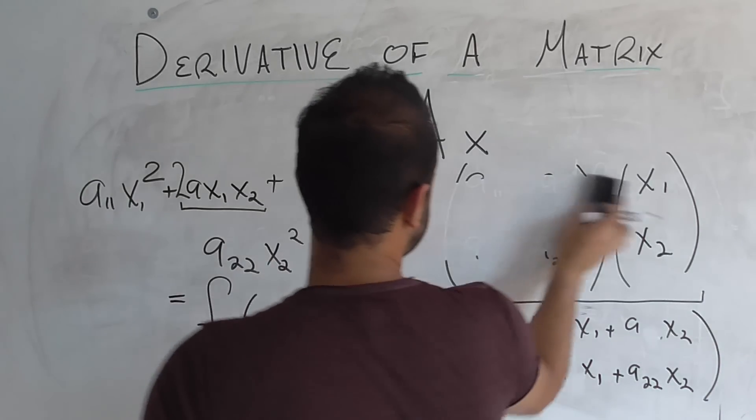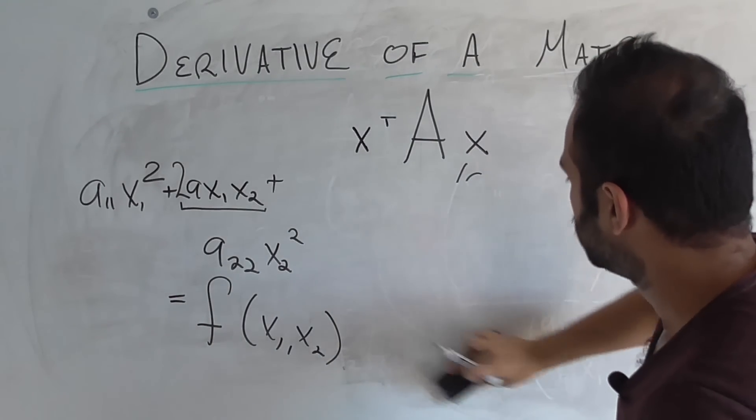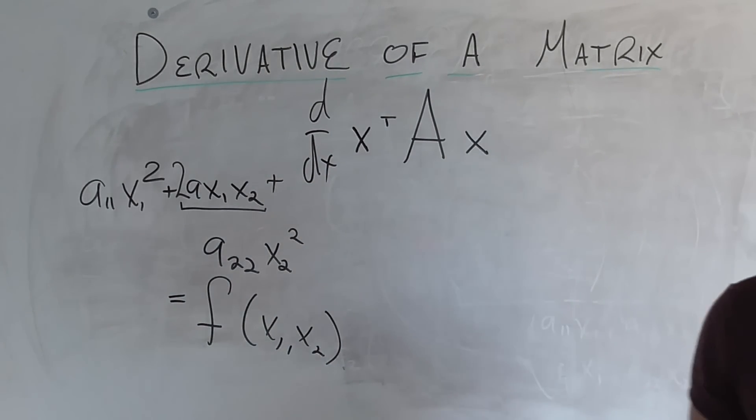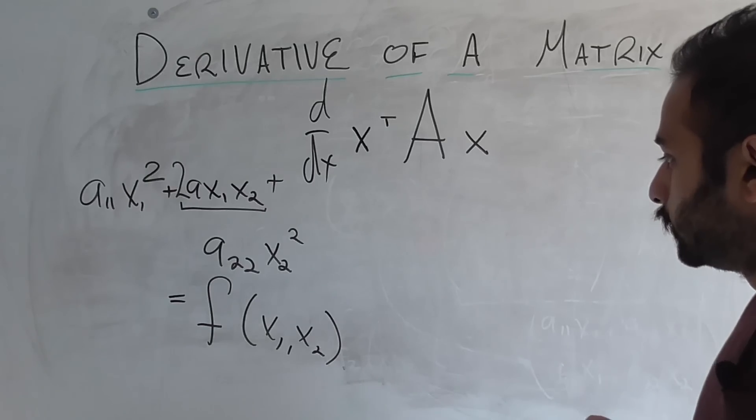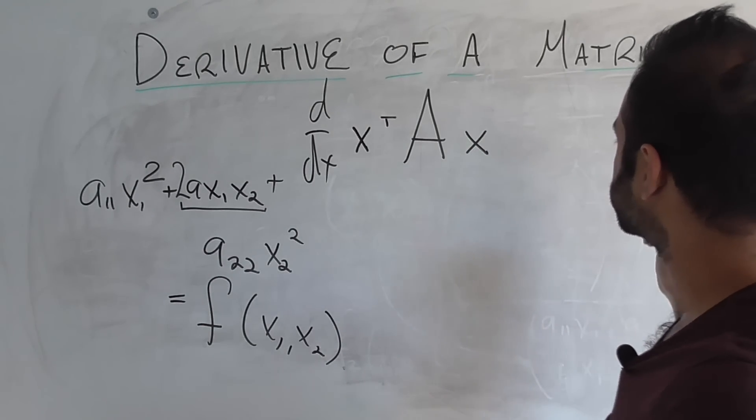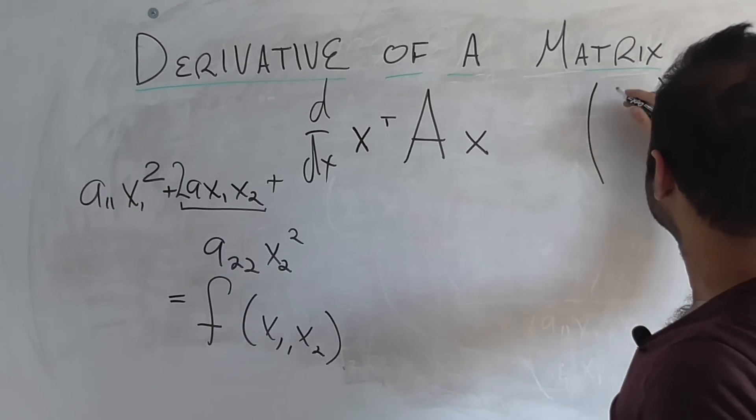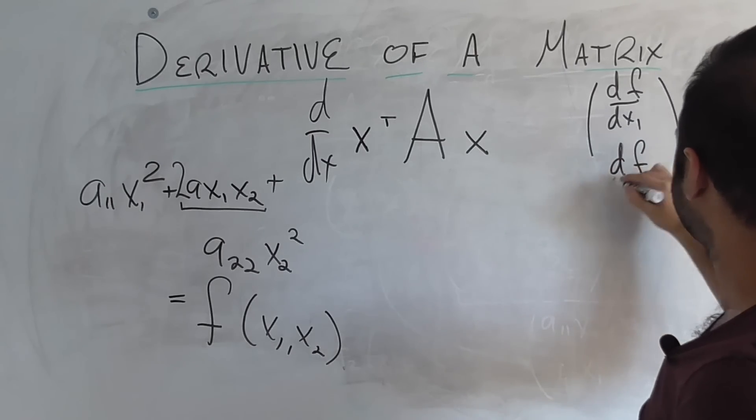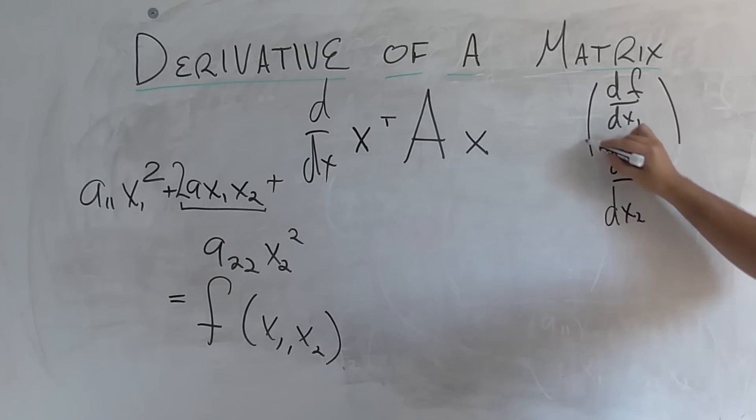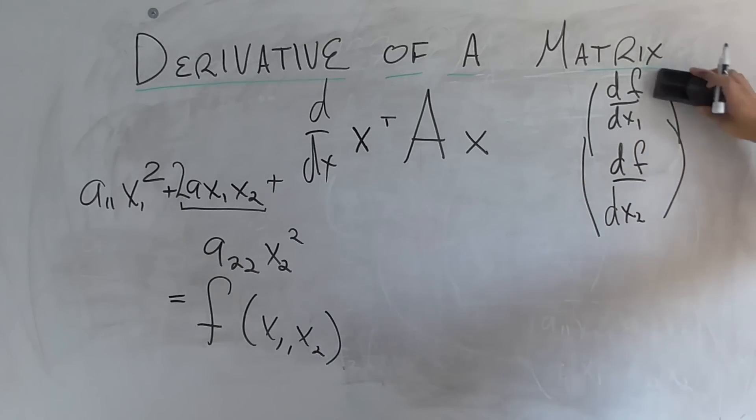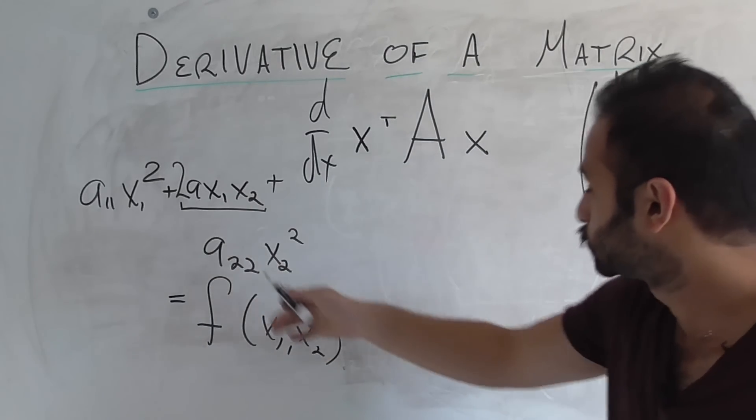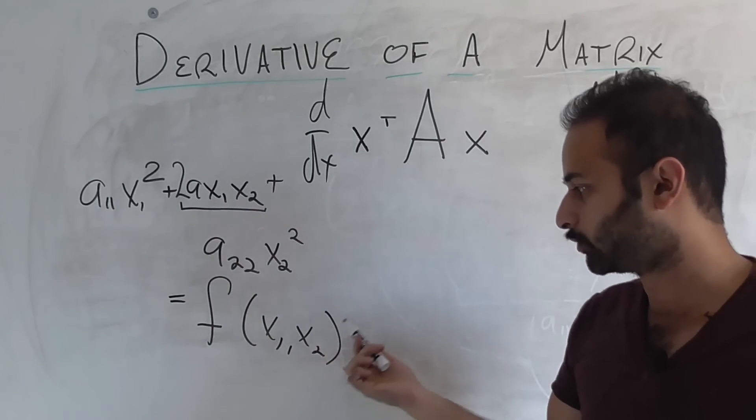Cool. So now we have this guy and we'll call this some function of x1 and x2. Now what does it mean for us to take the derivative d/dx of this linear transformation right here? Well, in this case we only have one function, so it's going to be as simple as df/dx1 and then df/dx2. So we only have one function, so we only care about the derivative of this function with respect to x1 and also the derivative of that function with respect to x2.